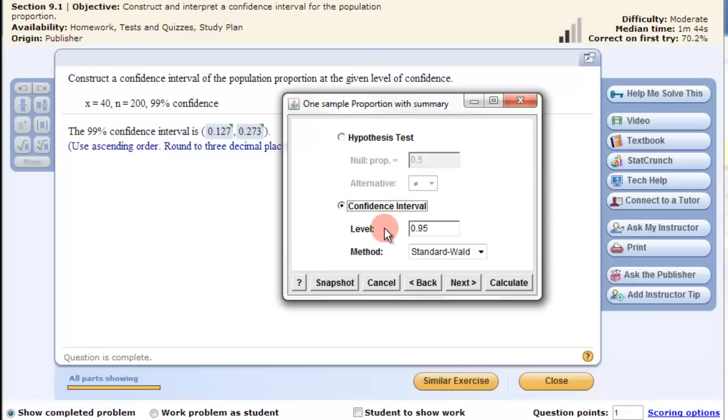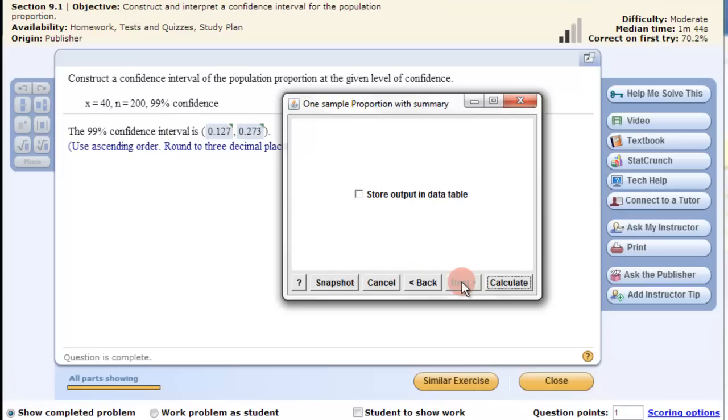Then we're doing a confidence interval, so we switch it to there and we tell what confidence interval we want. This one's a 99%. Leave it as this method.